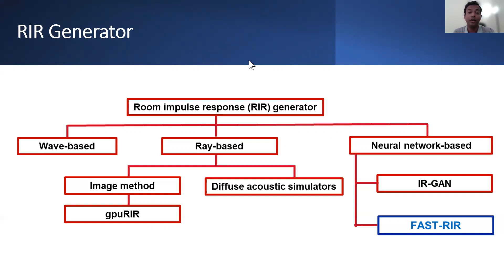Recently, neural network-based room impulse response generators have been developed to generate room impulse responses for a given acoustic environment. IRGAN is a GAN-based room impulse response generator trained on a real-world room impulse response dataset to generate realistic room impulse responses. However, IRGAN does not take conventional environmental parameters as input by design, making it less configurable than traditional room impulse response generators.